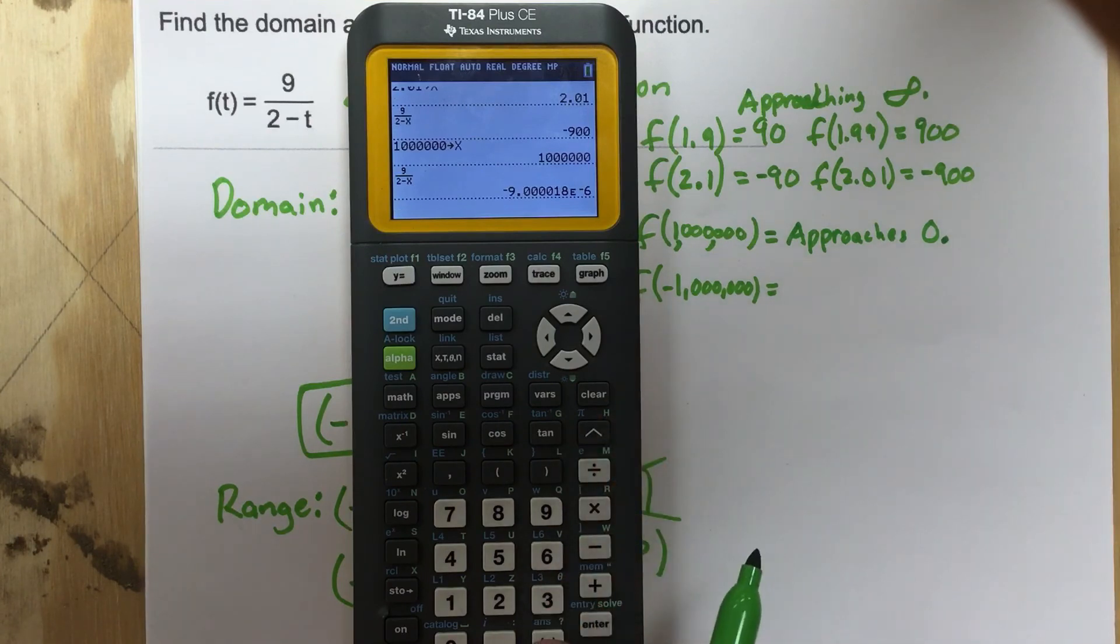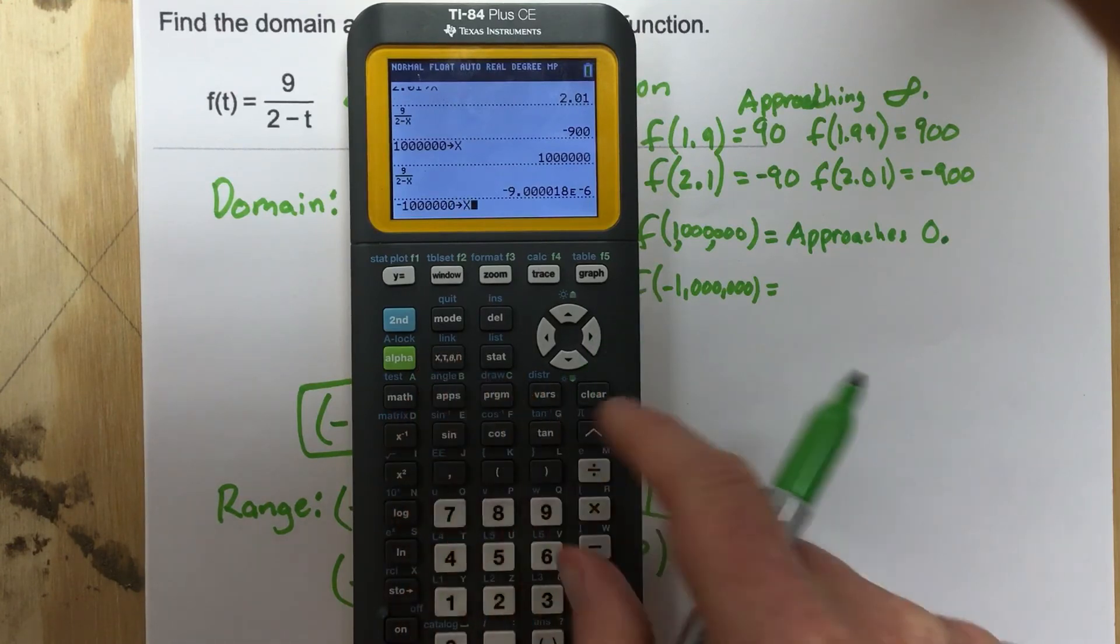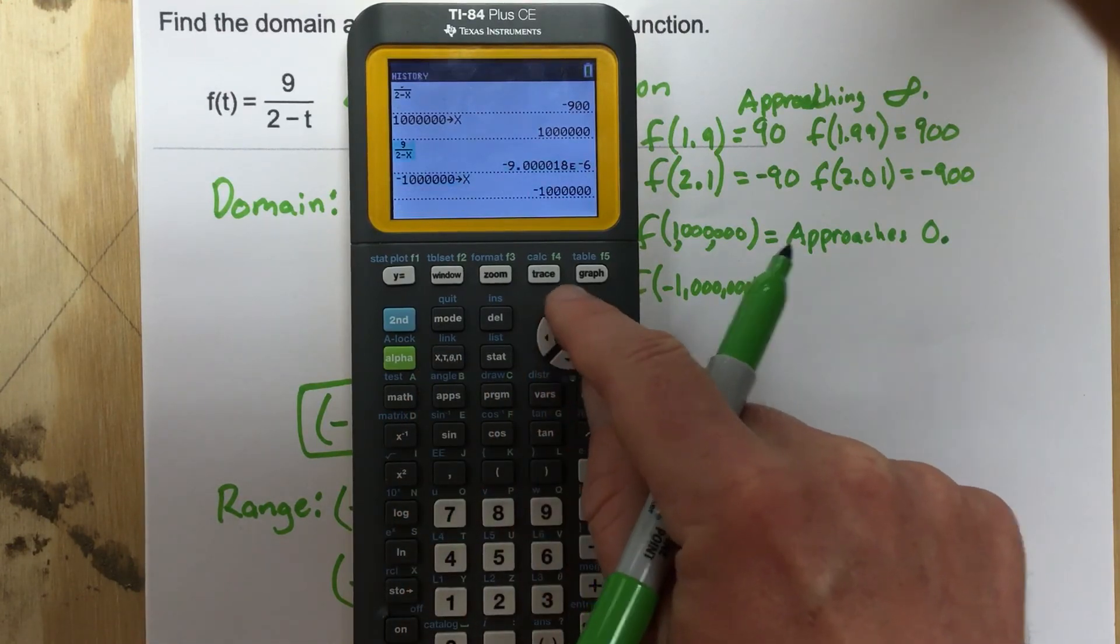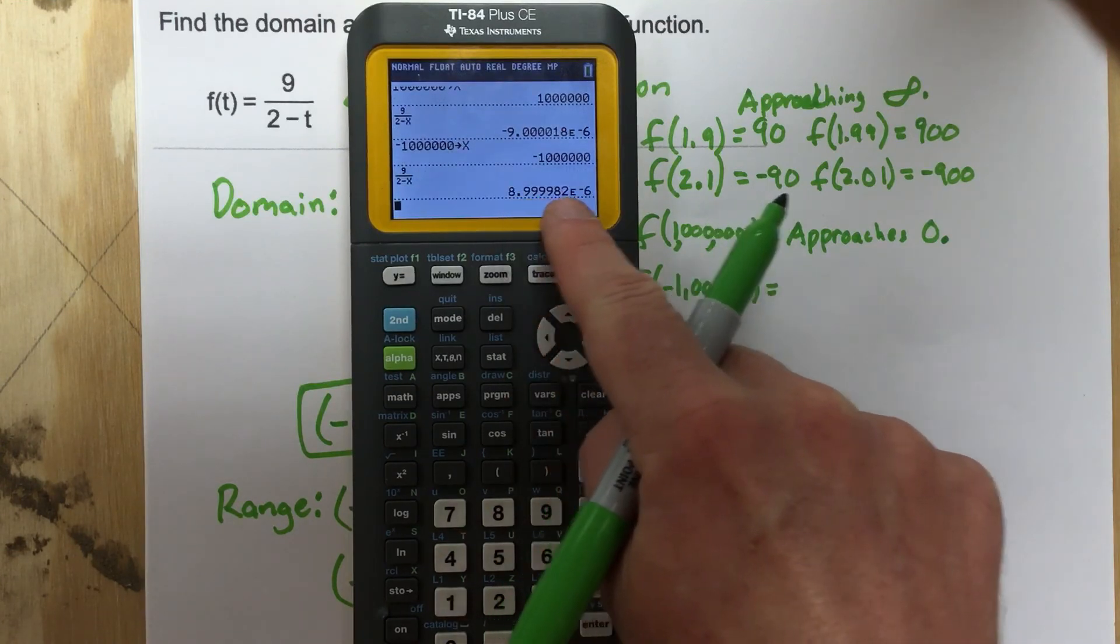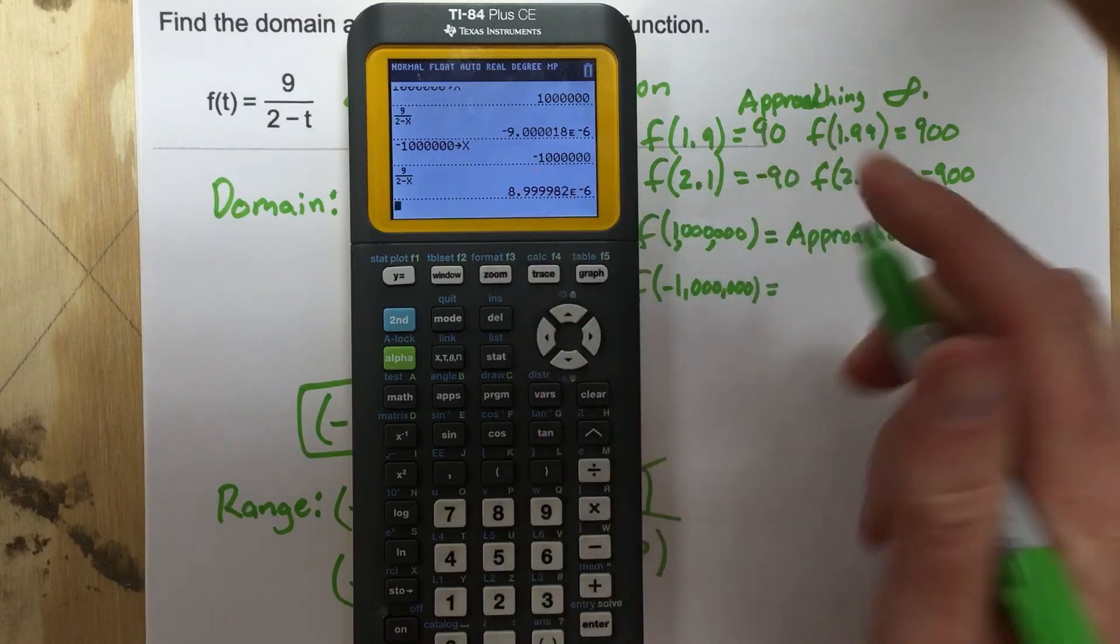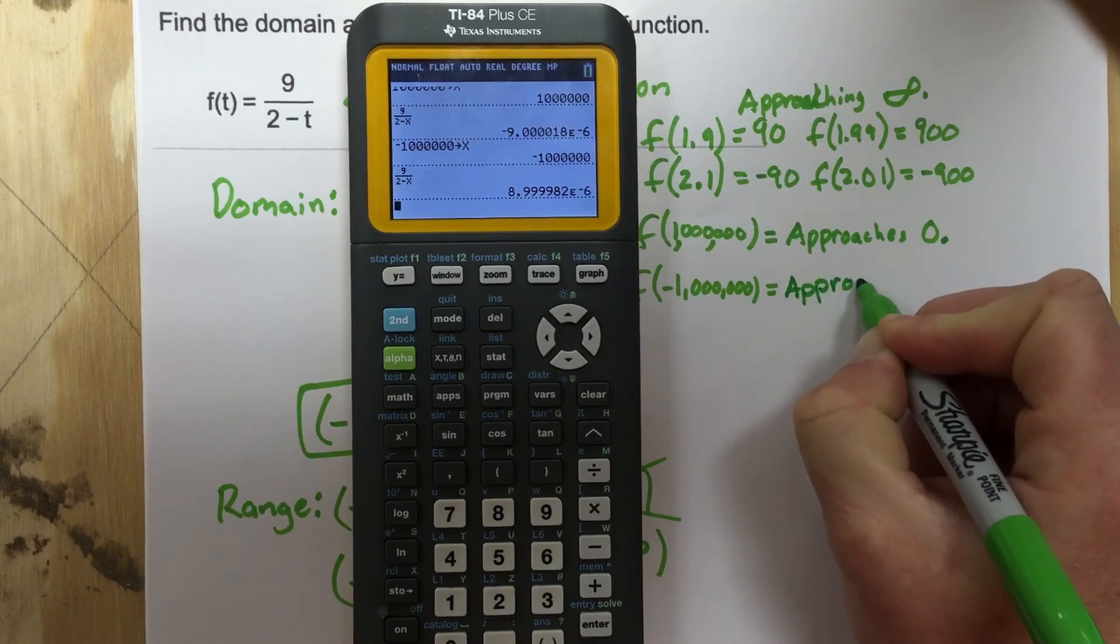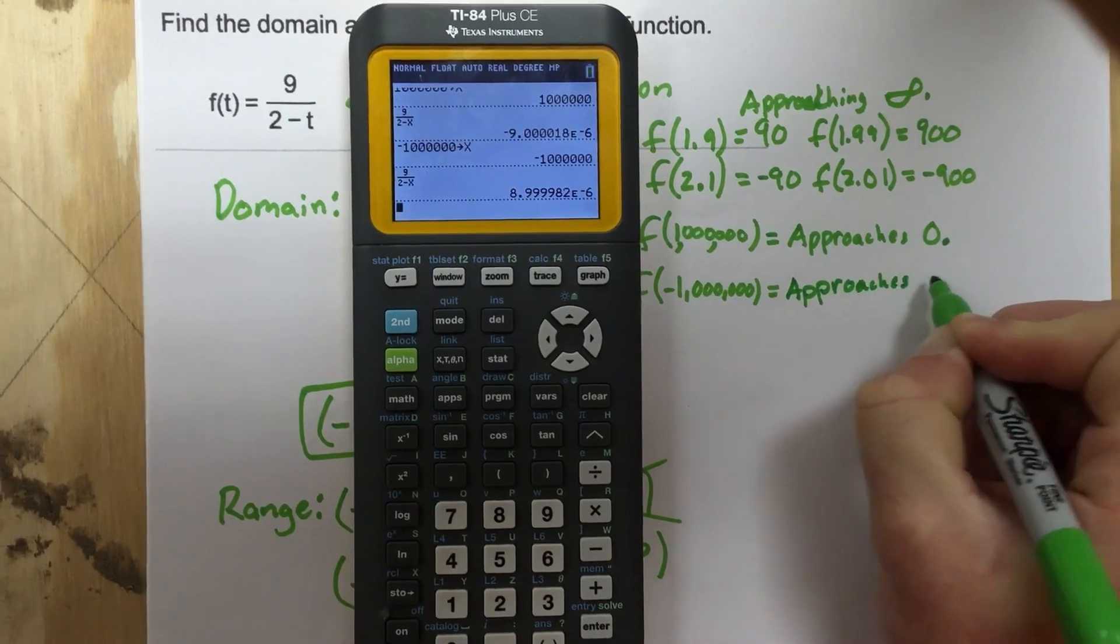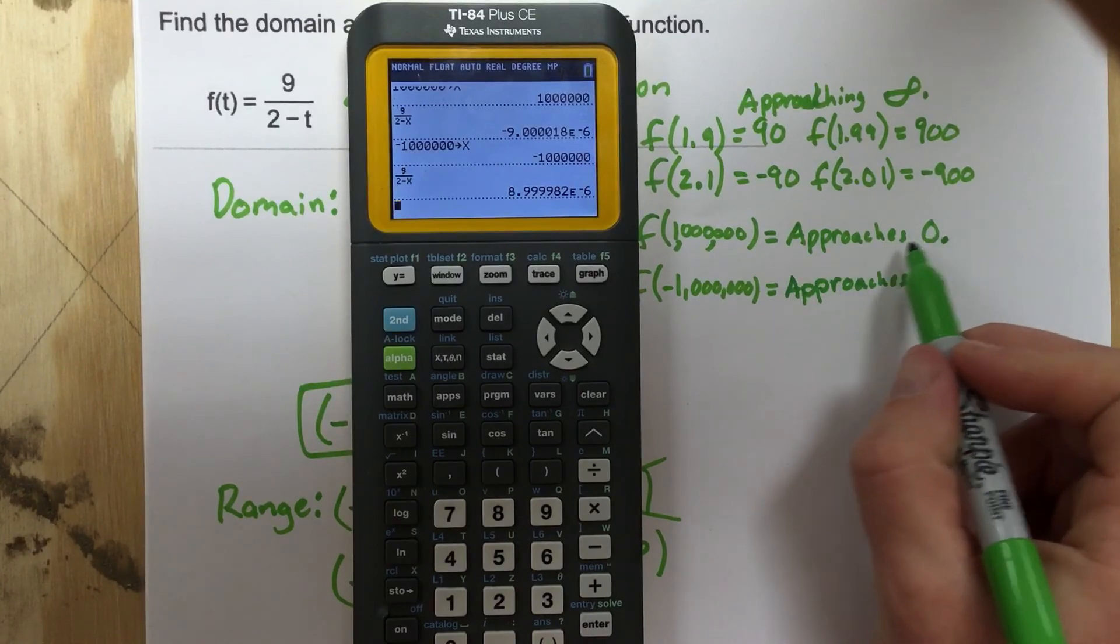Let's plug in a negative a million now. We're going to store it as x. And then grab that again. And notice that I'm really small again. I got a really small number. I'm close to zero. But this time it's positive. So this side I'm approaching zero from the positive side. So approaching zero in either direction.